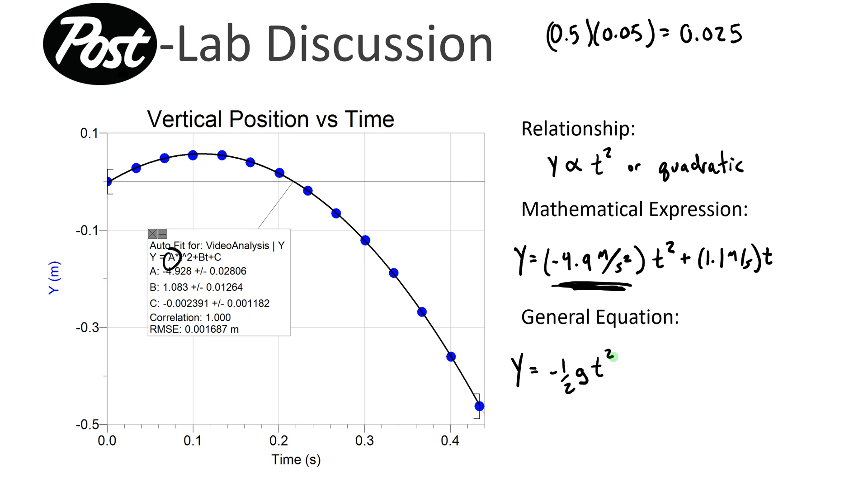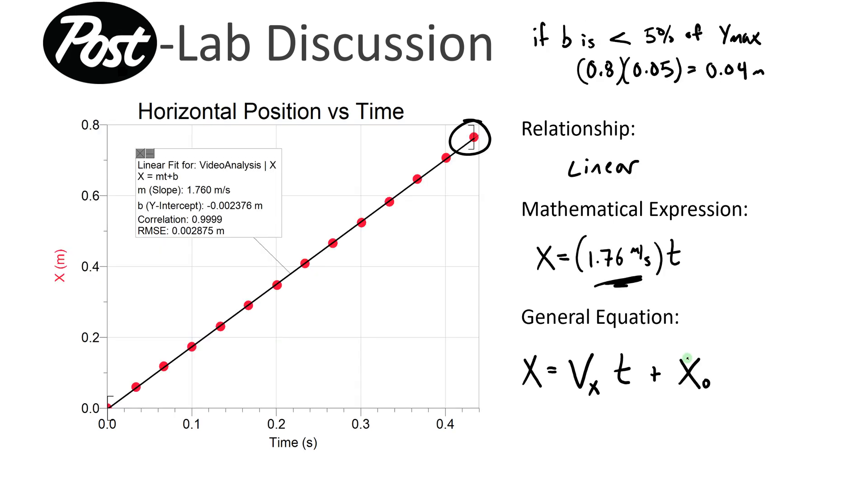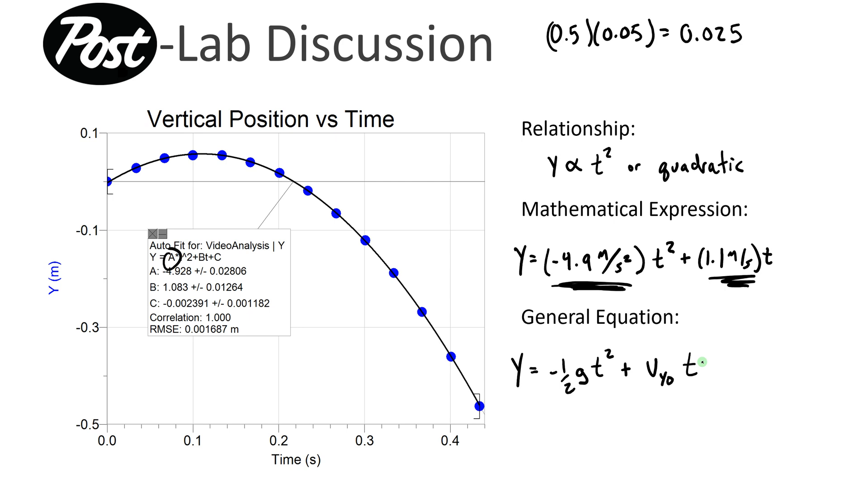Negative 1 half g t squared plus this guy right here, well the b term in a quadratic tells you about the initial steepness, and slope on a position versus time graph tells you velocity. That means this b term is telling you the initial velocity in the y direction. So we're going to call that v y naught. 1.1 meters per second is the initial y velocity, times time. Now we did not have a y intercept in our mathematical expression, the specific one, but that's because we set our initial height to be 0. Well, we have a variable for initial height because it's not always 0, and it's y naught. So this is now our general equation for the vertical position versus time.